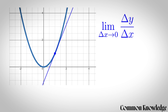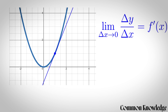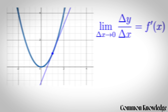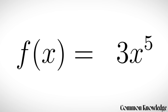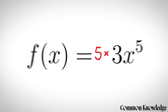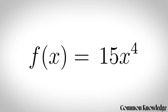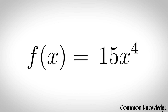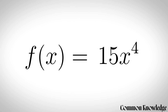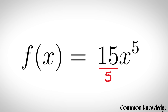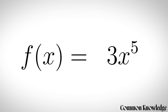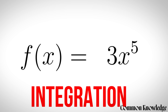This is known as the derivative of f(x), or f prime of x. It turns out that for any polynomial function, to find the derivative you just take each term, multiply it by the exponent, and then reduce the exponent by one. You can also go backwards by taking each term, adding one to the exponent, and dividing the coefficient by the new exponent. This is called integration.